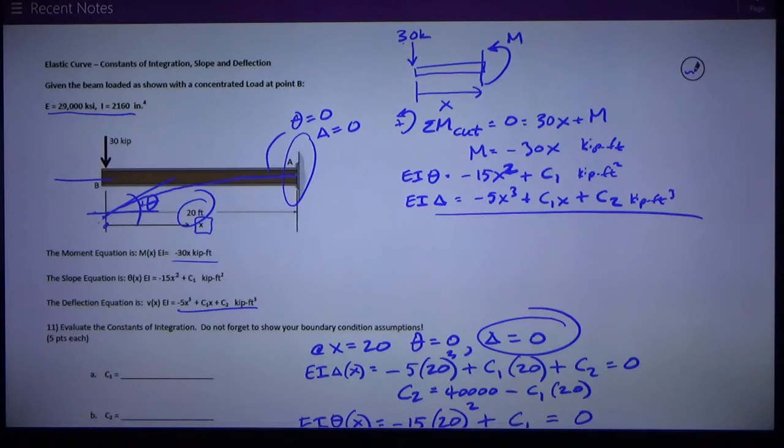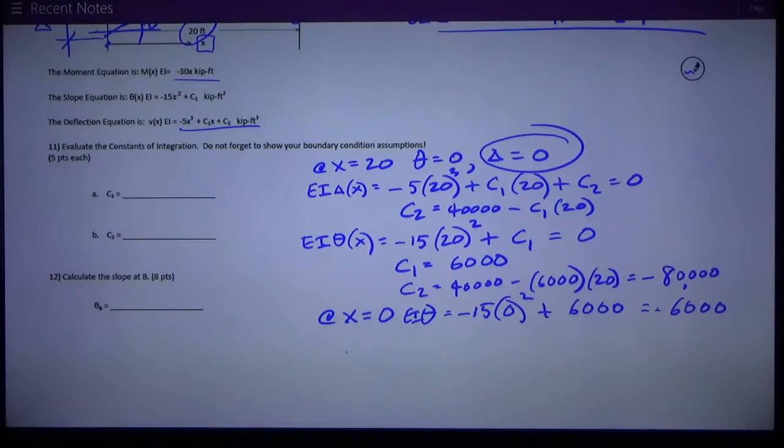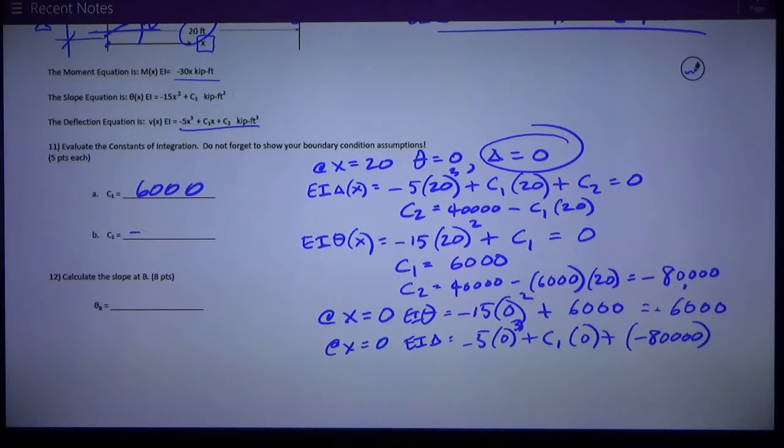Therefore, C1, which is this equation with X equals zero, EI theta is equal to negative 15 times zero squared plus 6,000. So, I just get C1 as the slope. Positive number agrees with the fact that I have positive slope at point B. Similarly, I have negative deflection. This deflection is a negative value. That's the deflection at B where X equals zero.